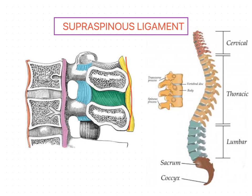The supraspinous ligament is a strong cord-like structure that connects the tips of the spinous processes from the seventh cervical vertebra to the sacrum. The fibers of this ligament become indistinct in the lumbar region.